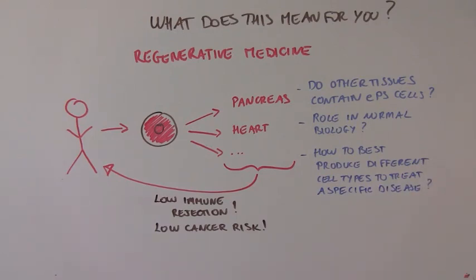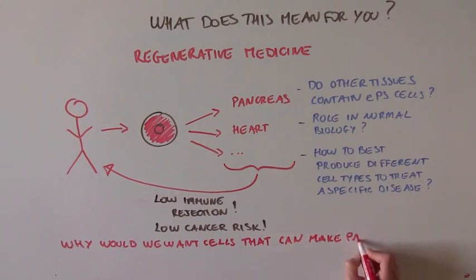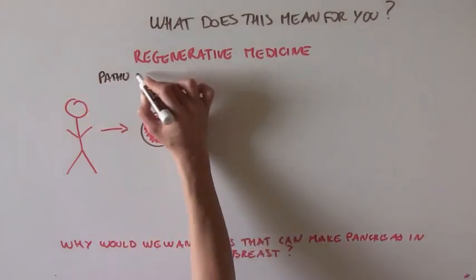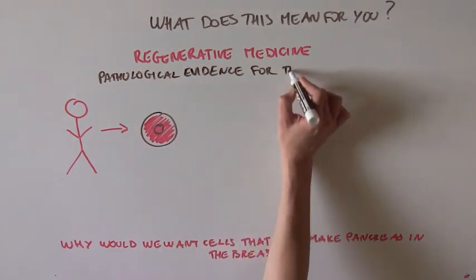No one thought these EPS cells could ever exist in the body. Why would we want cells that can make pancreas in the breast? But crazy enough, it turns out that there may be previous pathological evidence for their existence.